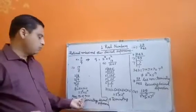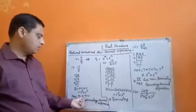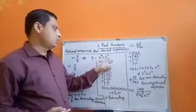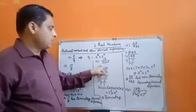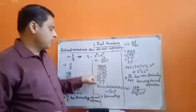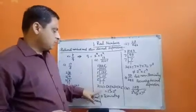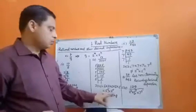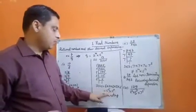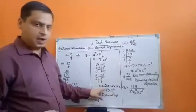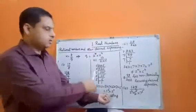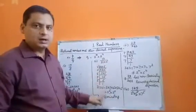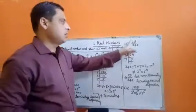The prime factorization of q is of the form 2 power m into 5 power n, therefore 17 upon 8 will have a terminating decimal expansion. The second example is 13 upon 3125. Here the denominator is 3125. Factorization of 3125 is 5 power 5, and we can write it as 2 power 0 into 5 power 5. So this is also of the form 2 power m into 5 power n, where m is 0 and n is 5.